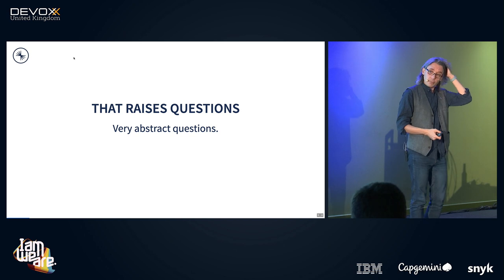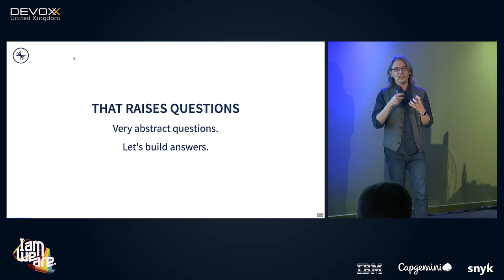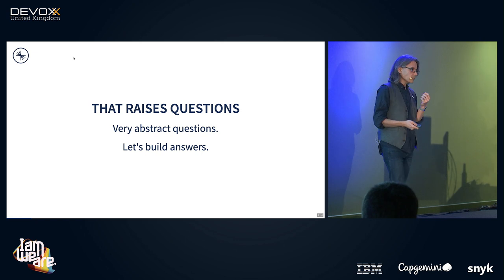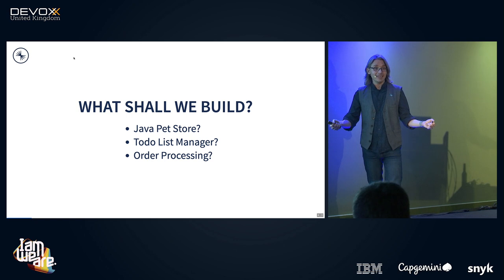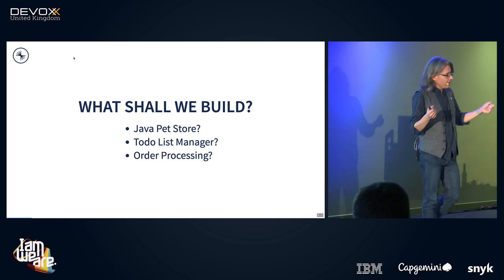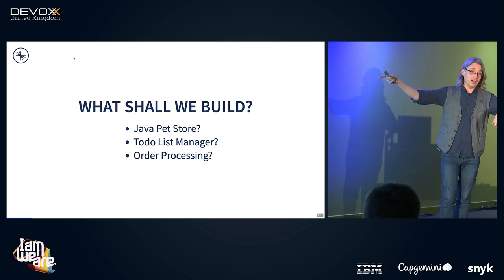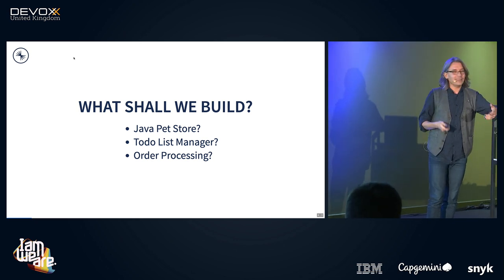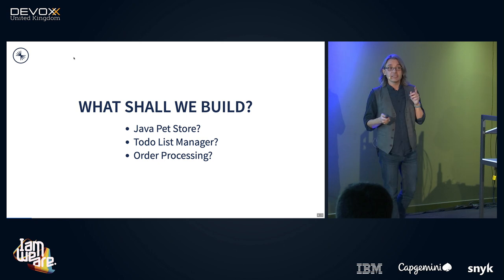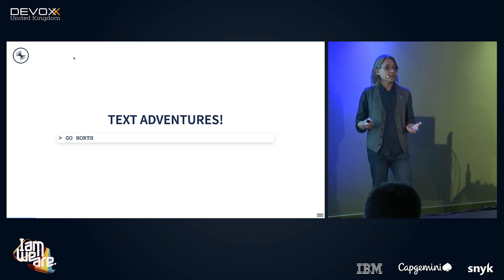So that's what I did a long time ago. I thought I would build something to get the ideas of Kafka under my fingernails. I could build a Java pet store — the world needs one of those — or a to-do list manager. If you program in JavaScript, you're as sick of to-do list managers as Java people are of Java pet stores. I could do order processing, which is a common example in Kafka, but I felt that was a bit done. So I went old school, back to my roots as a programmer, and tried building a text adventure.